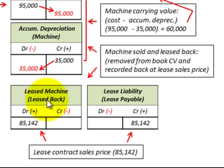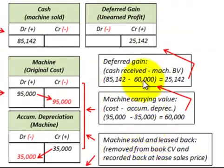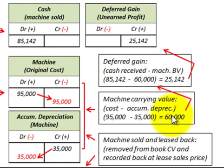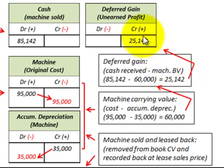We debit the leased machine for $85,142 and credit the lease liability (lease payable) for $85,142 — that's the contract sales price. Next, we calculate the deferred gain. The machine's carrying value is $95,000 cost less $35,000 accumulated depreciation, giving a book value of $60,000. Cash received of $85,142 less the $60,000 carrying value gives us a deferred gain of $25,142, which we credit as unearned profit.